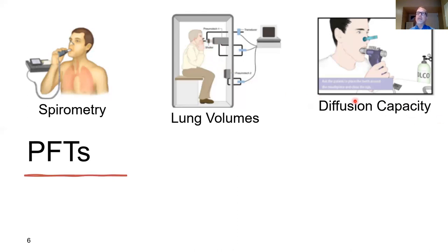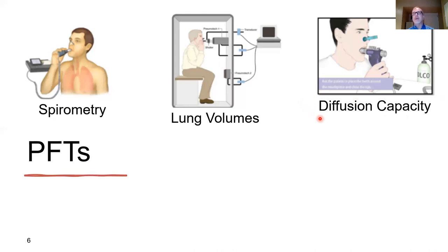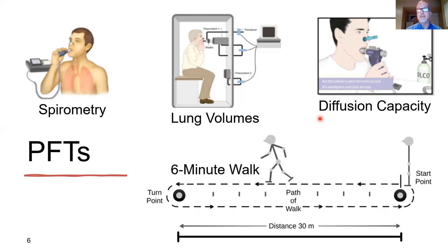Diffusing capacity is a test where patients inhale an inert gas that doesn't cross from the lungs into the bloodstream, along with carbon monoxide, which transfers very readily from the air sacs into the bloodstream and binds to hemoglobin in the red blood cells. This test measures the ability of gas to transfer from the air sacs into the blood vessels, and can be affected by conditions such as fibrosis of the lung. It may worsen in bronchiectasis and emphysema and gives us an idea of the ability of the lungs to provide sufficient oxygen.